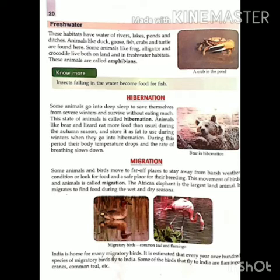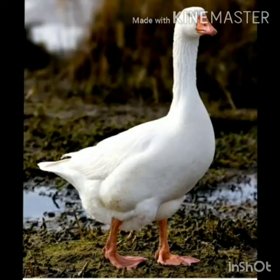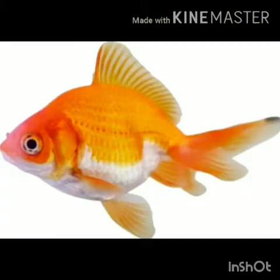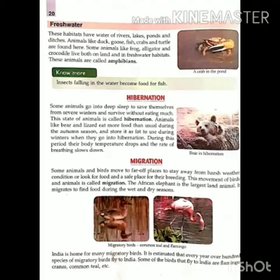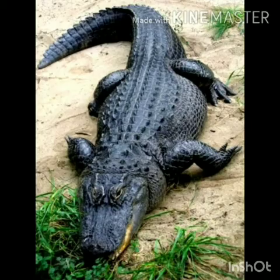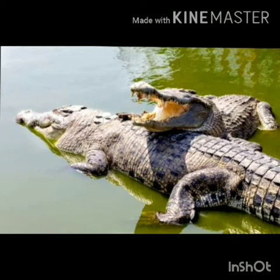Animals like duck, goose, fish, crab and turtle are found here. Some animals like frog, alligator and crocodile live both on land and in freshwater habitats. Kuchh janwar jisme frog, alligator, crocodile hote hain — yeh sab zameen ke saath saath paani par bhi rehne mein anukool hote hain.